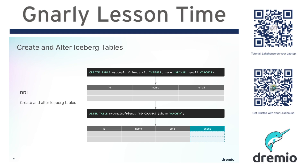Dremio is the data lakehouse platform, which basically provides a lot of features for working with data lakes across three different categories: unified analytics — being able to connect to a lot of sources and curate those federated sources into a governed semantic layer; a SQL query engine that allows you to query all that data very performantly and accelerate it further with features like Reflections; and lakehouse management features for when you're working with your Apache Iceberg tables, allowing you to manage and track them using the integrated catalog and automated optimization features.